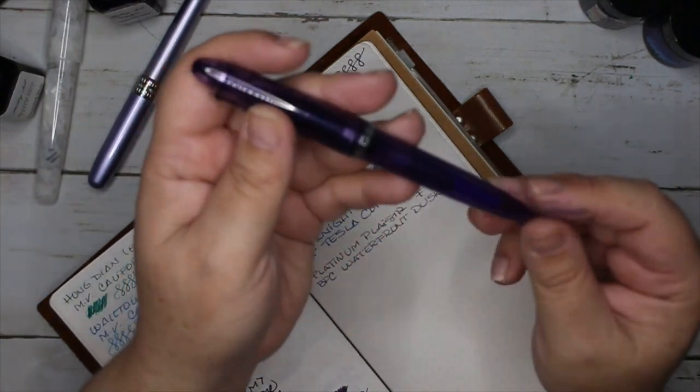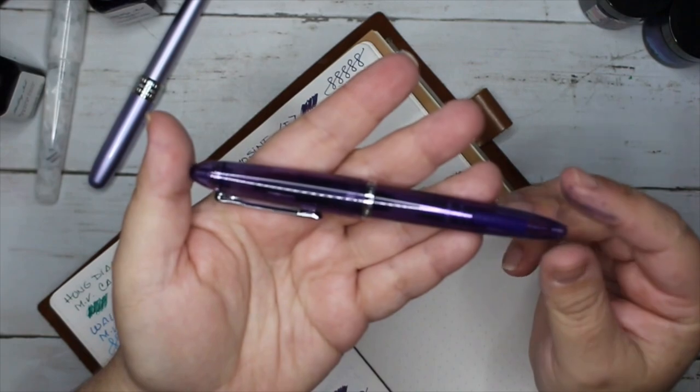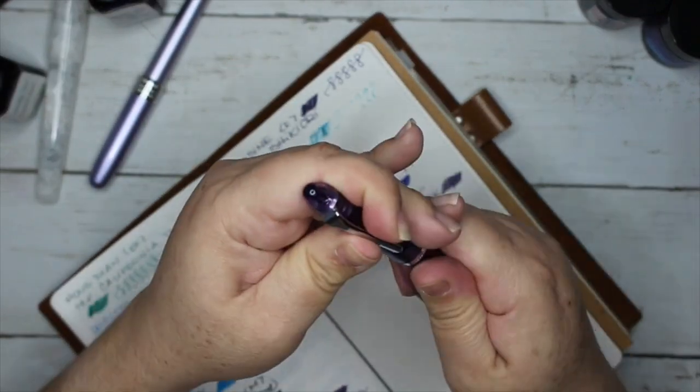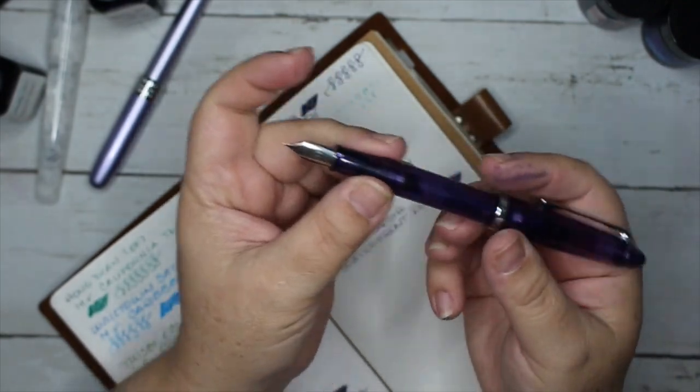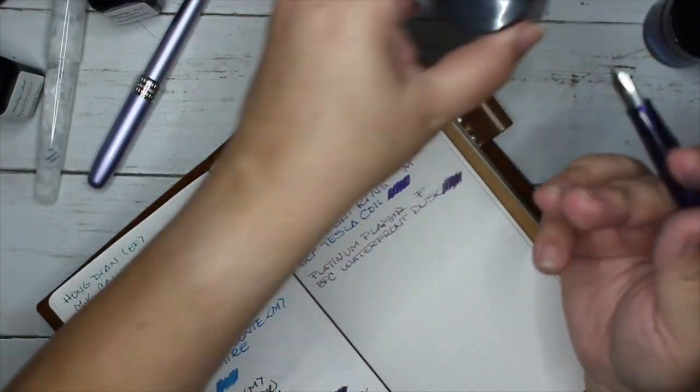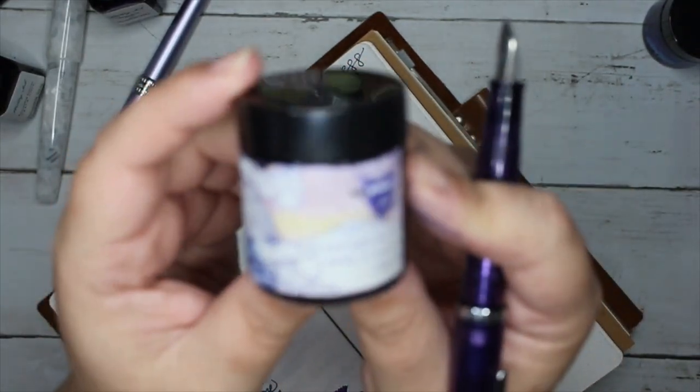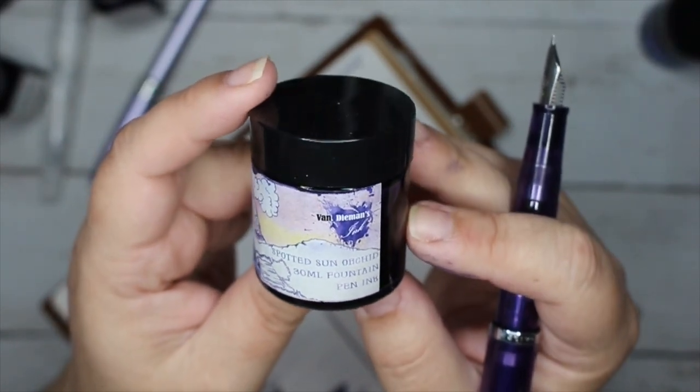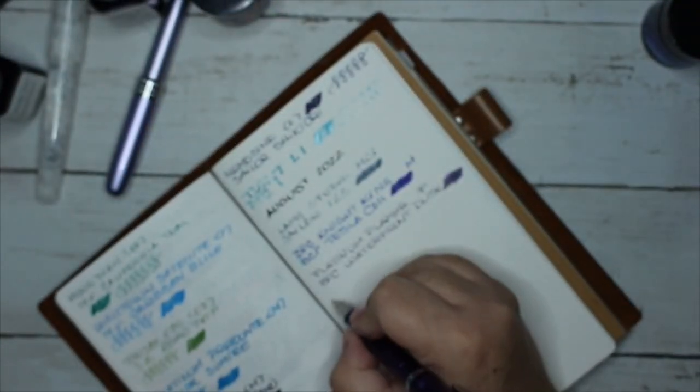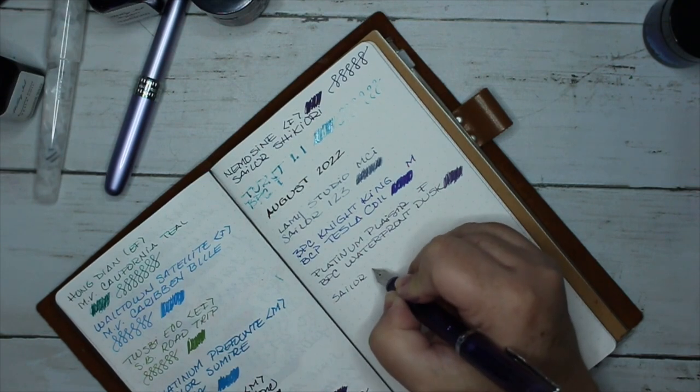My next planner pen, I'm giving this another try, trying to be fair. This is a Sailor Compass with a medium fine nib. It's never been really my favorite, I just felt it was too scratchy and it annoyed me because I paid too much for it to be so scratchy. This is a Van Dieman's ink, Spotted Sun Orchid. I really like that ink.